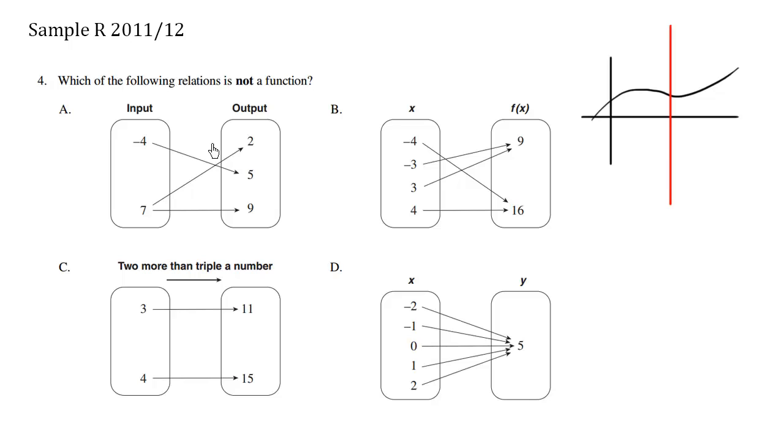So when we look at these choices here, we see an input of 7 here. And the 7, if this was x equals 7, then the output here would be 2 and 9.